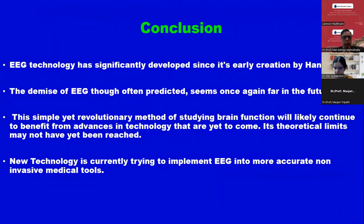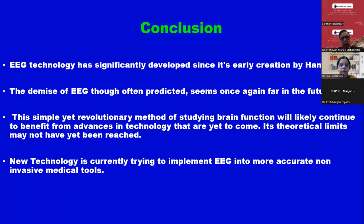Conclusion: EEG technology has significantly developed since its early creation by Hans Berger. The demise of EEG, though often predicted, seems once again far in the future. People thought it was of hardly any value. This simple yet revolutionary method of studying brain function will likely continue to benefit from advances in technology. Now we are talking of machine learning and artificial intelligence that have yet to fully arrive. Its theoretical limits may not have yet been reached.